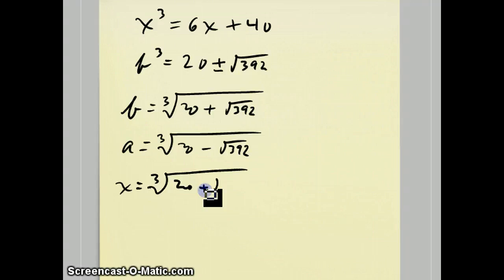And I get the very ugly answer of x equals cube root of 20 plus the square root of 392 plus the cube root of 20 minus the square root of 392.